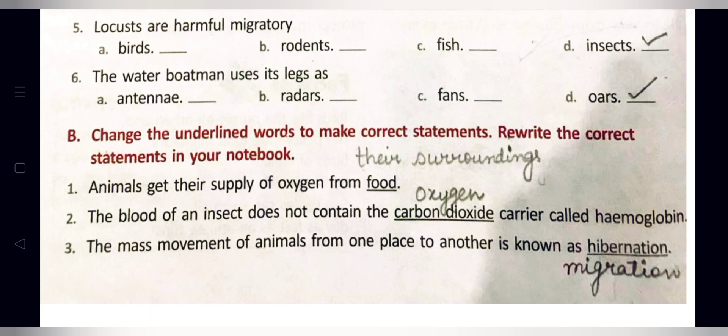Statement two: The blood of an insect does not contain the carbon dioxide carrier called hemoglobin. The underlined word 'carbon dioxide' is incorrect. We replace it with 'oxygen.' Correct statement: The blood of an insect does not contain the oxygen carrier called hemoglobin.